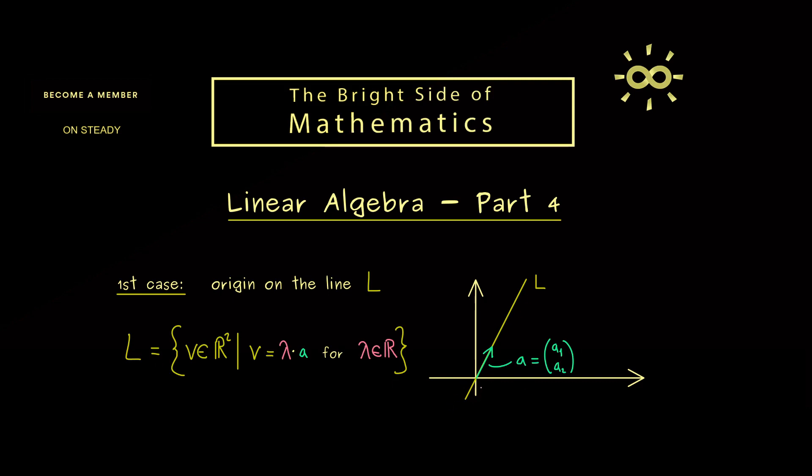So you see we only have to put in one vector for the direction. However, another possibility would be to take a vector that is orthogonal to A. So you already know we need the inner product to talk about orthogonality.